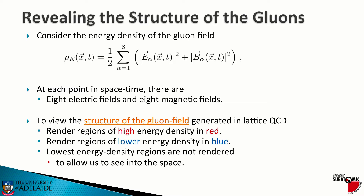In order to view the structure, I'm going to render regions where that energy density is high in red. Regions where the energy density is dropping down will be rendered in blue. The lowest energy density regions I won't render at all, so we can see into the volume of space. Let me bring up the animation.